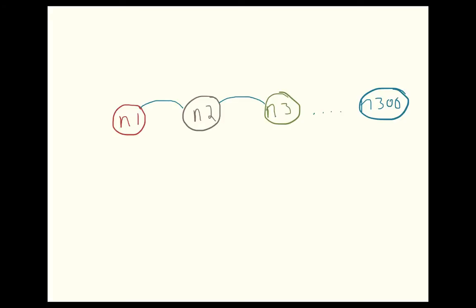So what we're going to do is show how to implement a recursive call by setting up a base case. The base case is going to look at node 1 and see if it is connected to itself. Then it's going to see if it's connected with another node, and then allow us to see if that other node is connected further down the line. So it will work if we're looking at two nodes, but it would also work if we're looking at whether N1 is connected to N300. So we'll take a look at how to implement that with some actual code now.